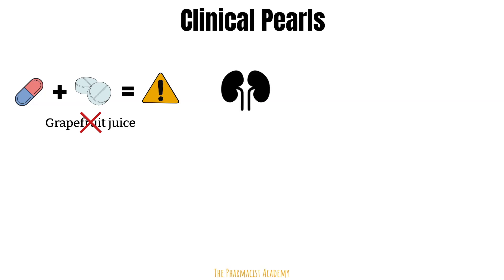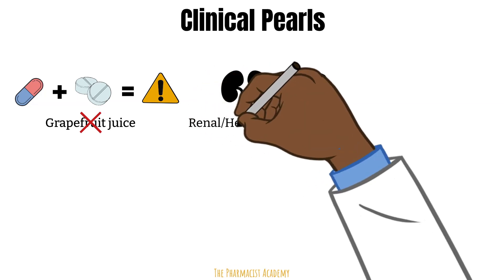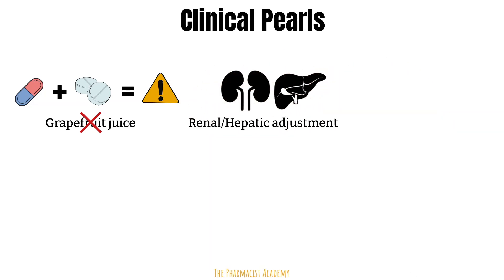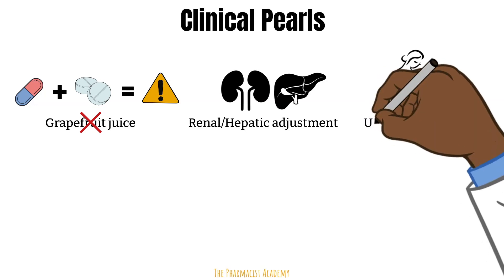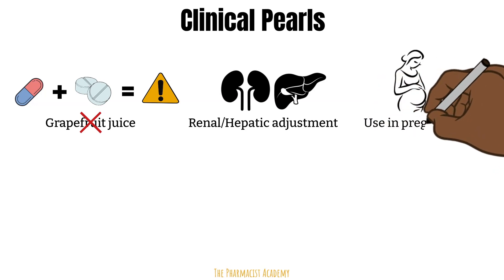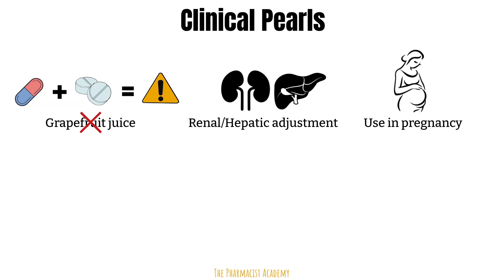Always check for renal and hepatic dose adjustments, since some of these agents do require it. The dihydropyridine calcium channel blockers may be used to manage hypertension in pregnancy, but always check for any updated information regarding use of any medication in pregnancy before you verify and dispense it.